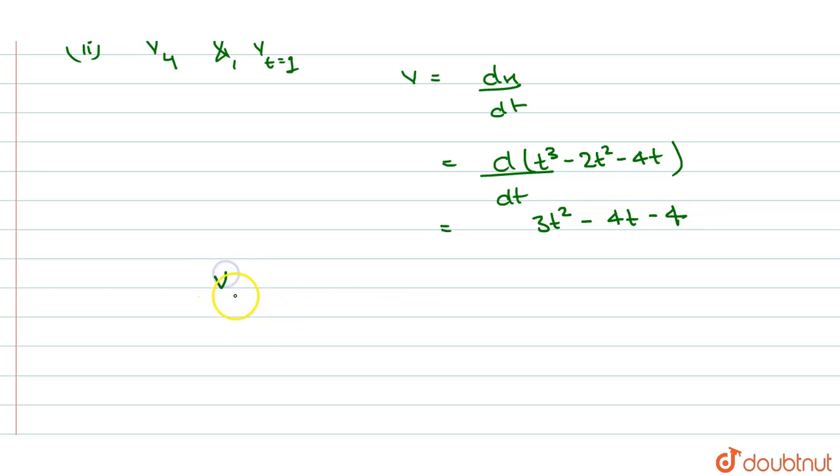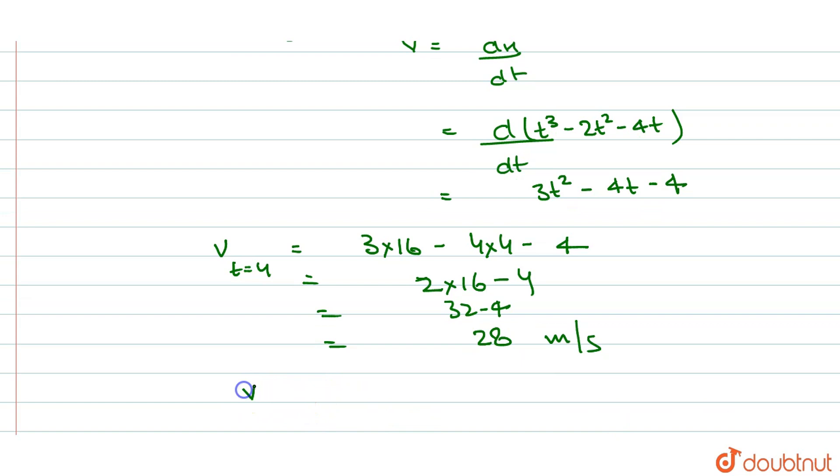Now velocity at t equals 4, how much will it be? 3 into 16 minus 4 into 4 minus 4. So we have 48 minus 16 minus 4, that gives us 28 meters per second. And the velocity at t equals 1, how much is it?